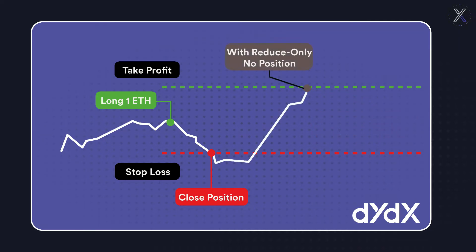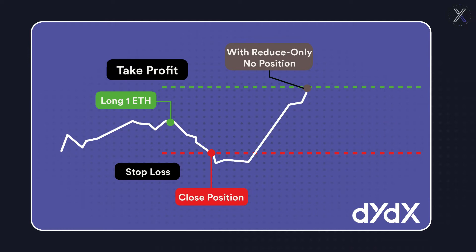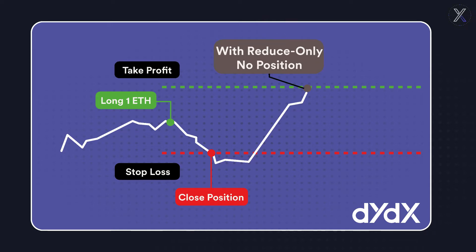With the reduce only option set, if a stop loss closes your position, the take profit order would be reduced by the amount that was closed. So the take profit order would not execute in a way that creates an unintended new position.